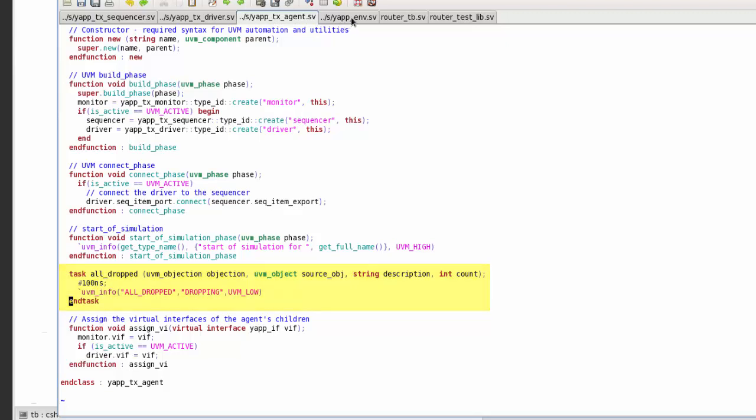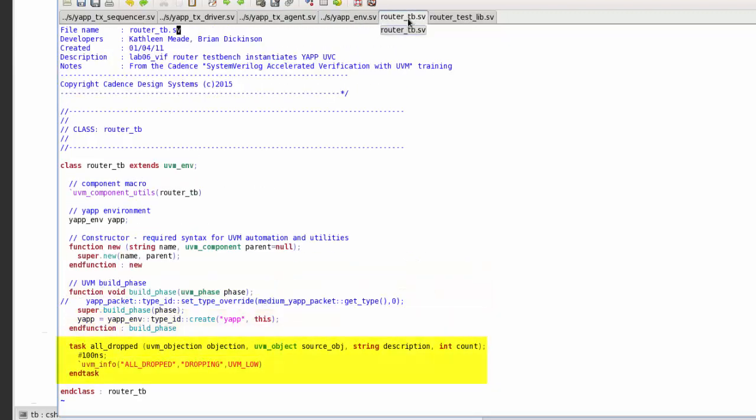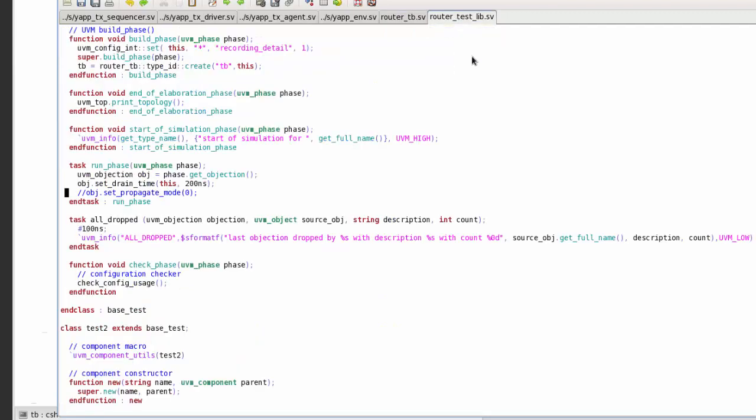agent, UVC, testbench and testclass. Each implementation simply waits 100 ns and prints a message, except for the test class all_dropped.